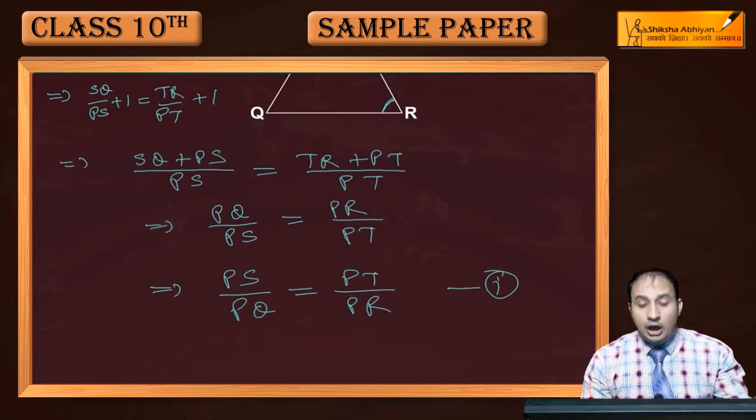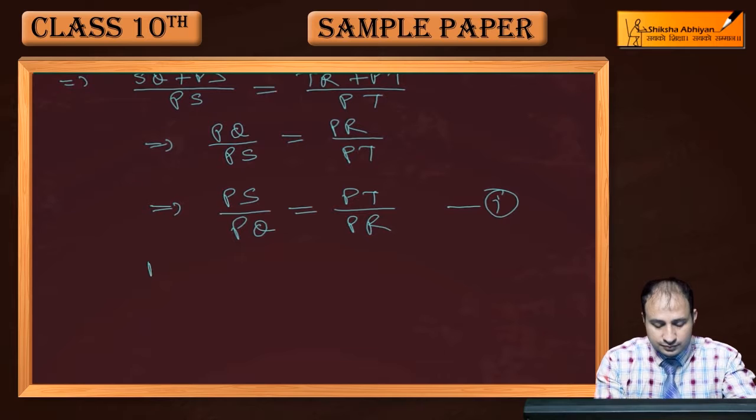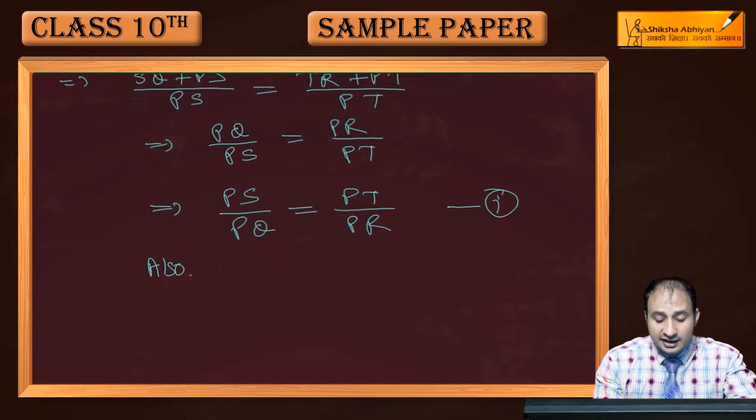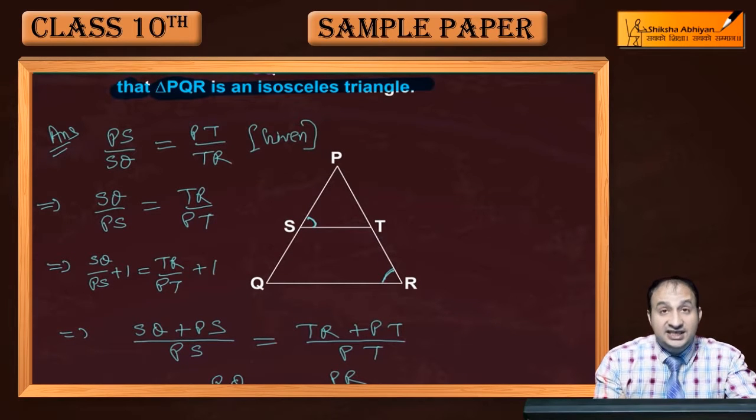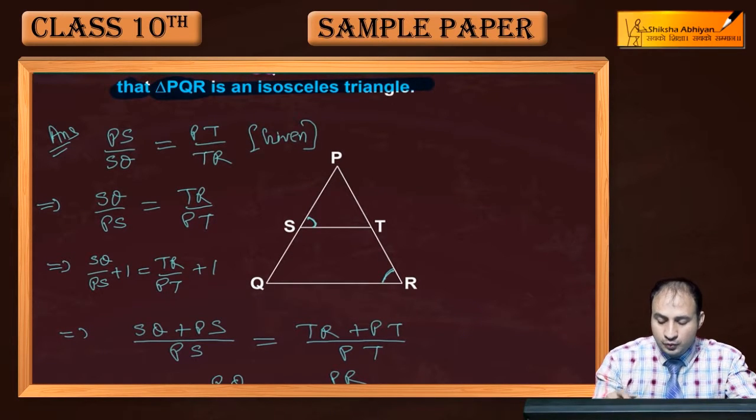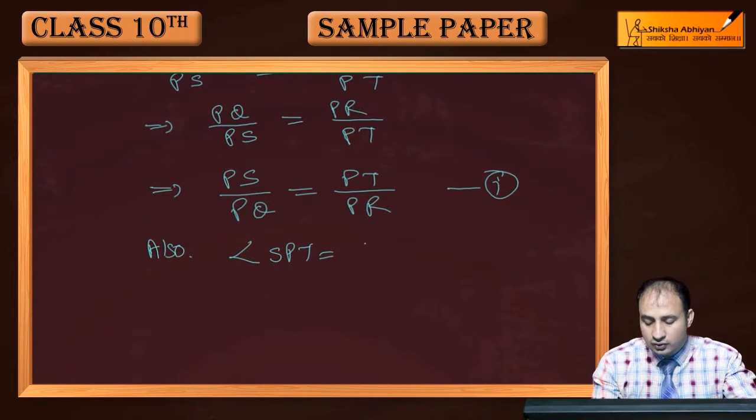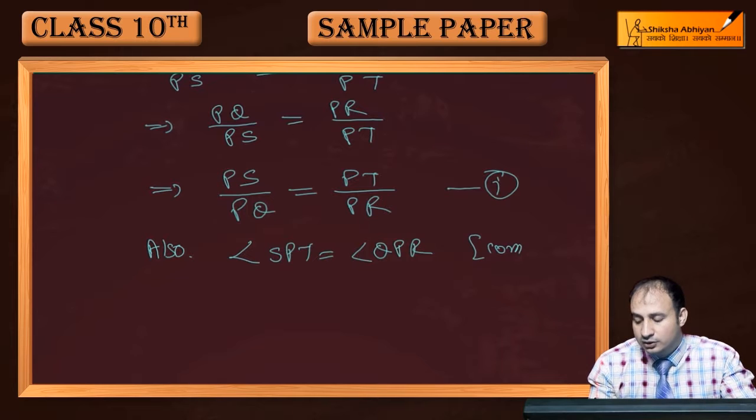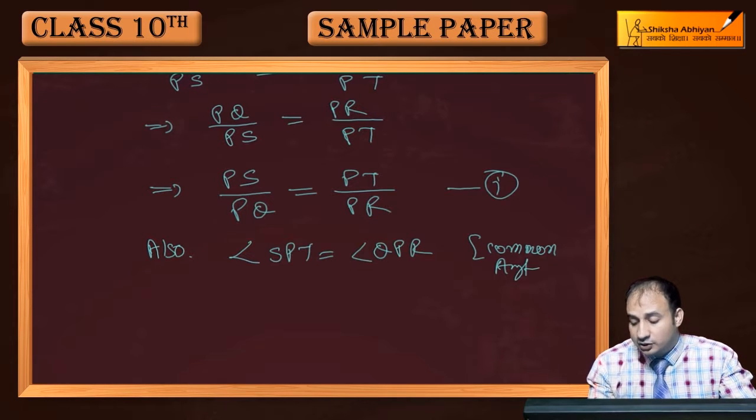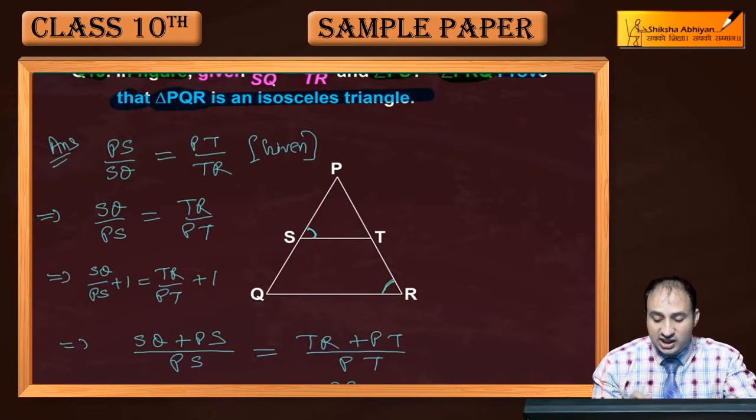Now, PS upon PQ is equal to PT upon PR. Also, if we compare angle SPT is equal to QPR. This is nothing but common angle. I have two triangles, triangle SPT and QPR.